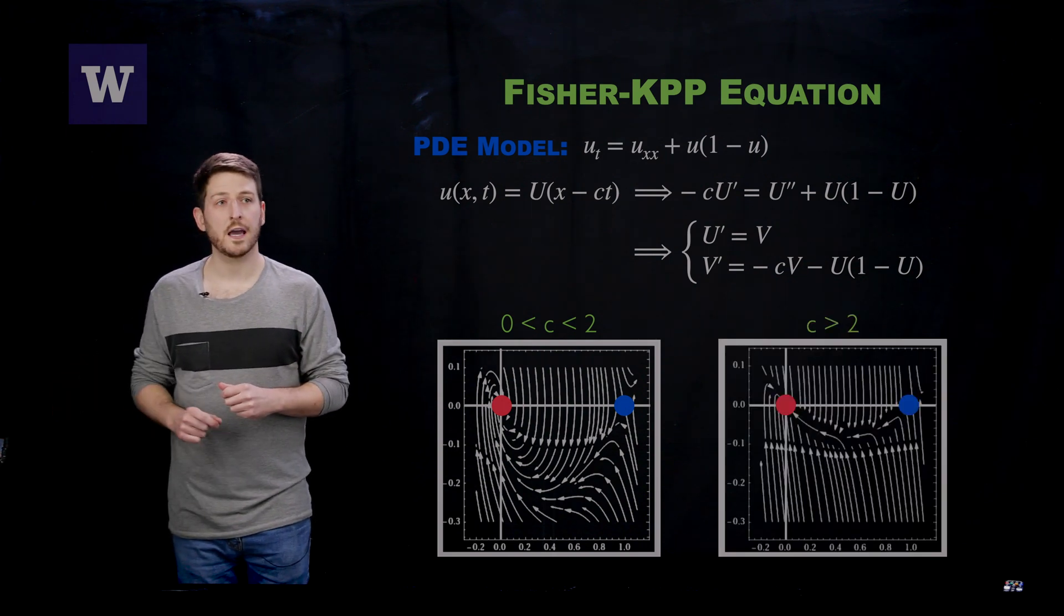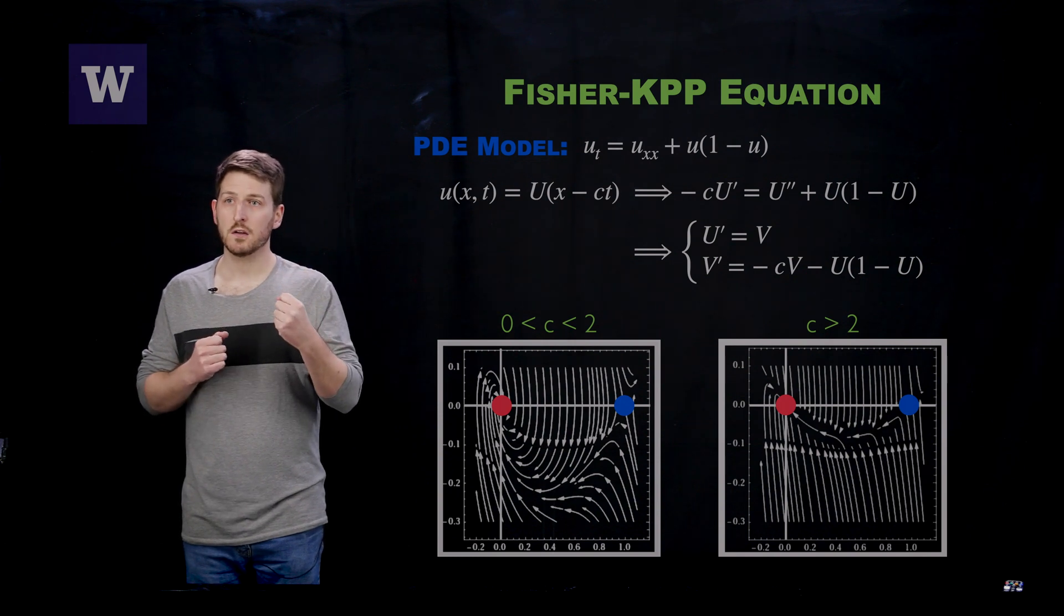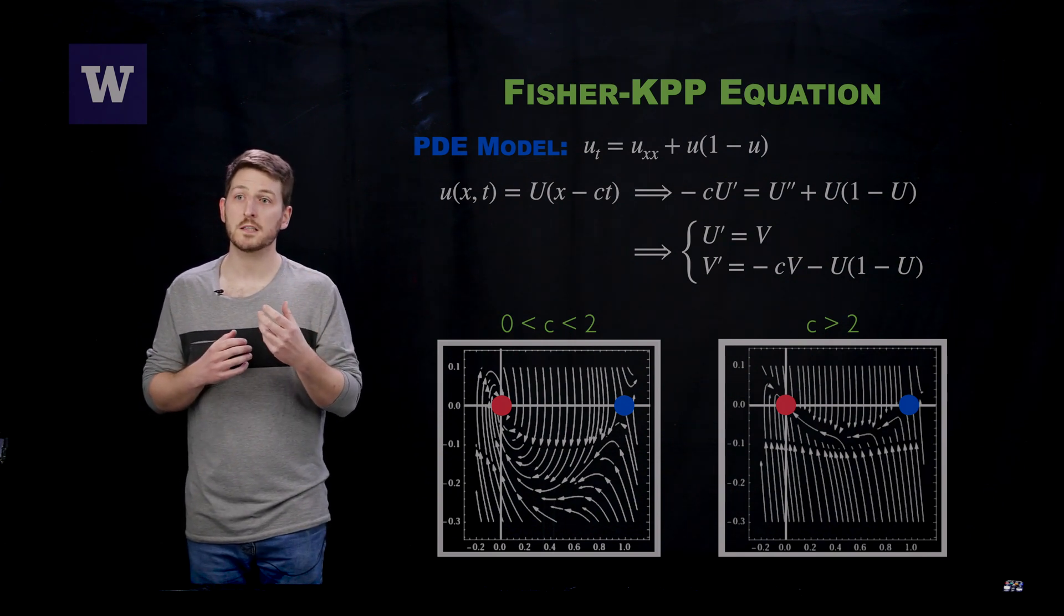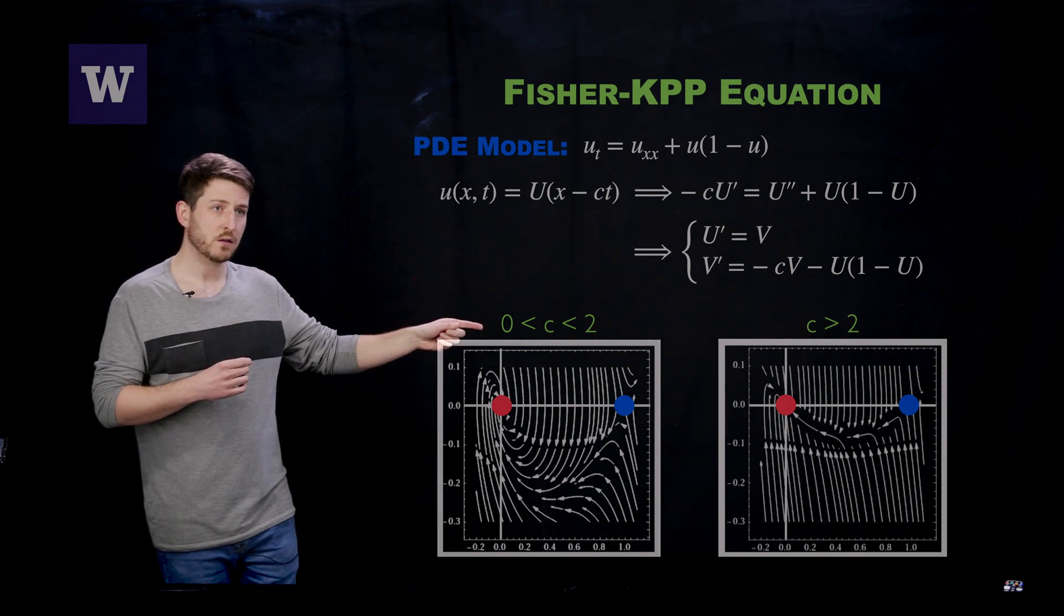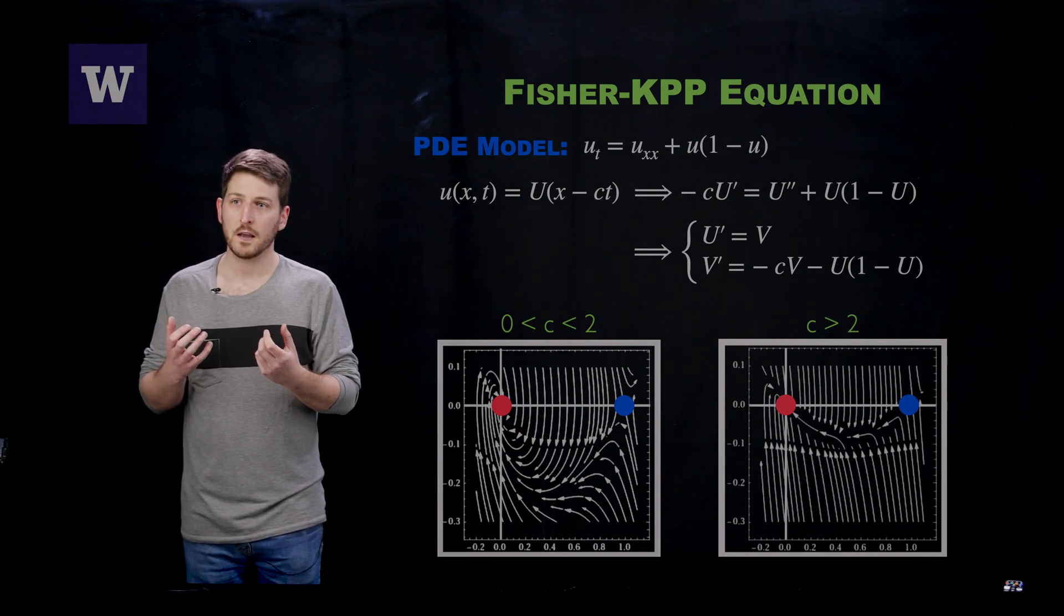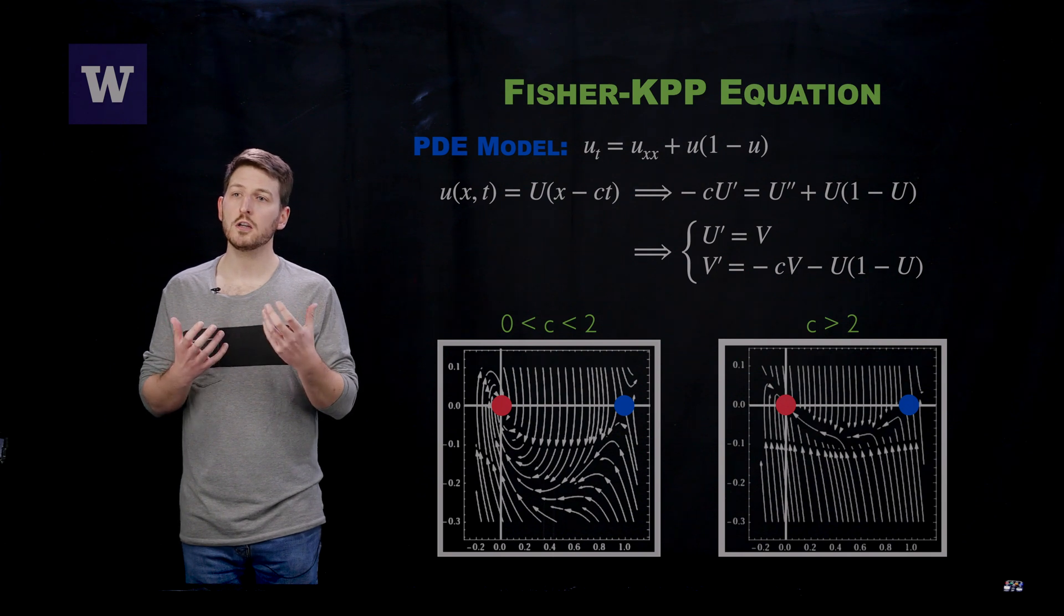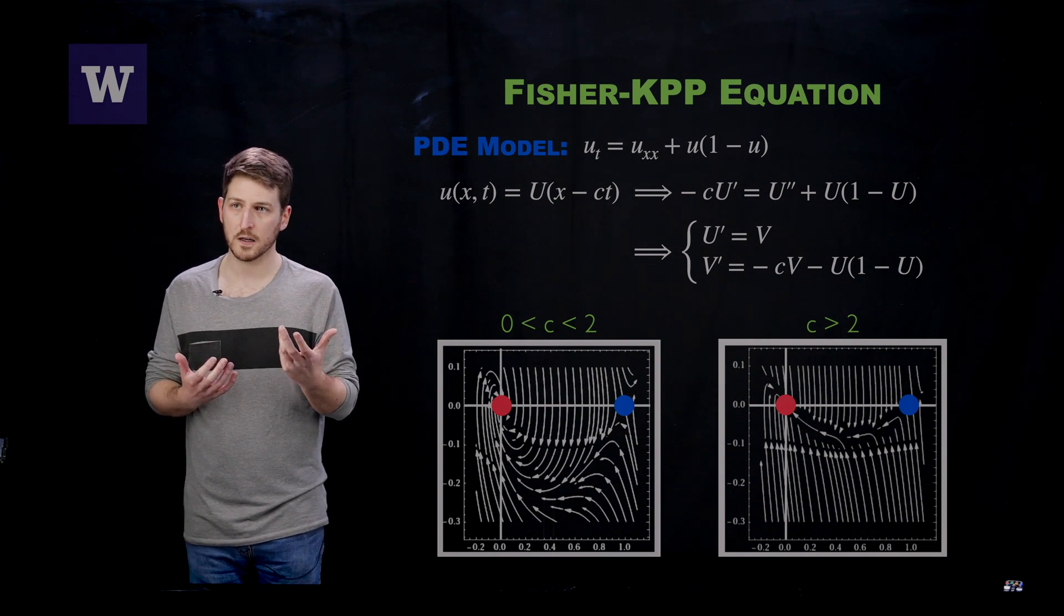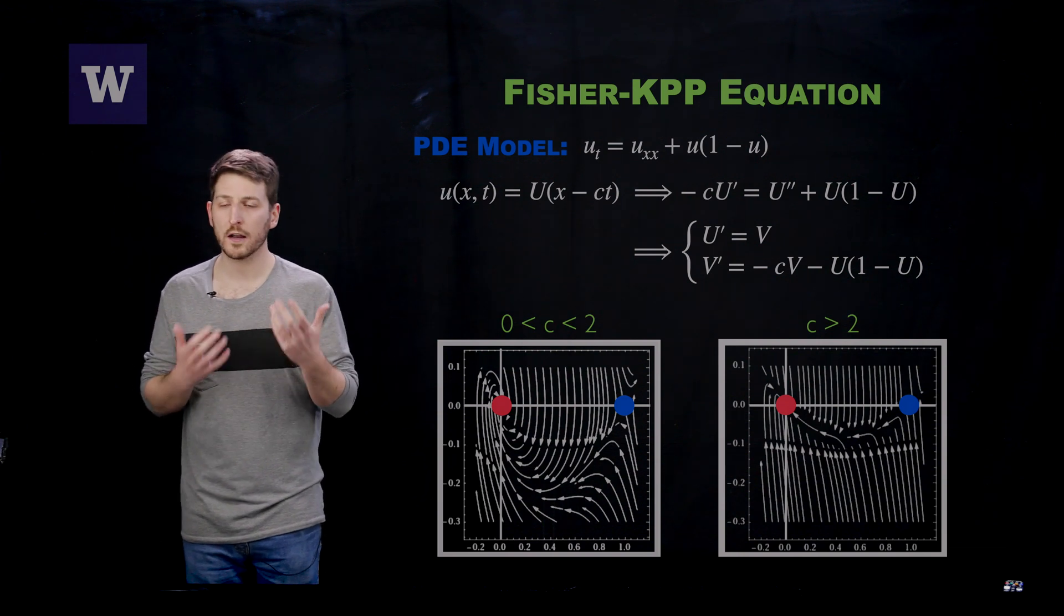But then we can look at what happens if you look at faster traveling waves, traveling waves that travel with a speed larger than 2. As you can see from the vector field over here, we are no longer spiraling into that red state. In particular, you can couple this with some analysis to prove that you always have a heteroclinic connection between blue and red states for every c ≥ 2.